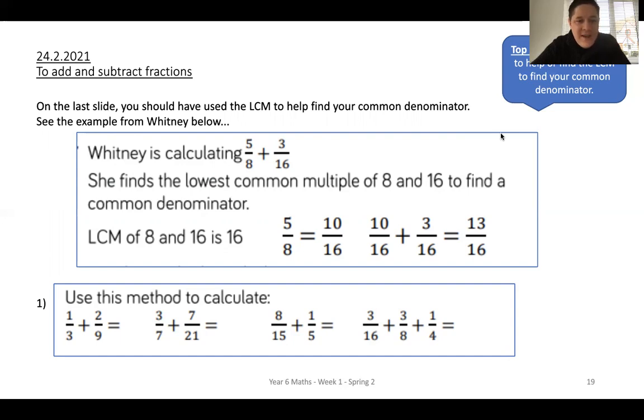Whitney is calculating five eighths add three sixteenths. She finds the lowest common multiple of eight and sixteen to find the lowest common denominator. Perfect. And she works out that the lowest common multiple is actually sixteen. So, three sixteenths can stay as it is. She just needs to convert her five eighths. Five eighths equals, oh, what's happened to the eighths to get to sixteen? It's doubled. So, double my five, you get to ten. Next to it, ten sixteenths add the three sixteenths equals thirteen sixteenths. She's added her fractions. So, I'd like you to use Whitney's method of finding the lowest common multiple to get your common denominator and then adding them together.